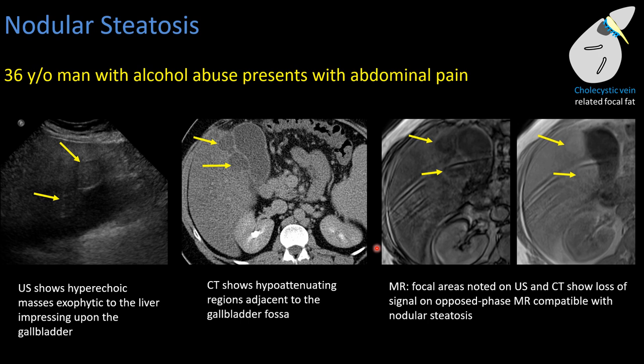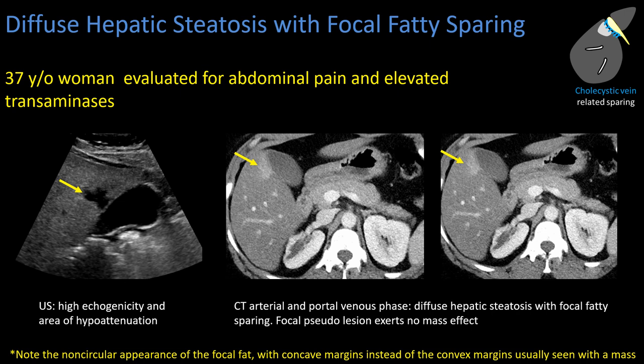This patient has diffuse hepatic steatosis and was being evaluated for abdominal pain and elevated transaminases. The liver is diffusely echogenic with loss of periportal fat, and along the gallbladder fossa there is a non-circular region of hypoechogenicity.